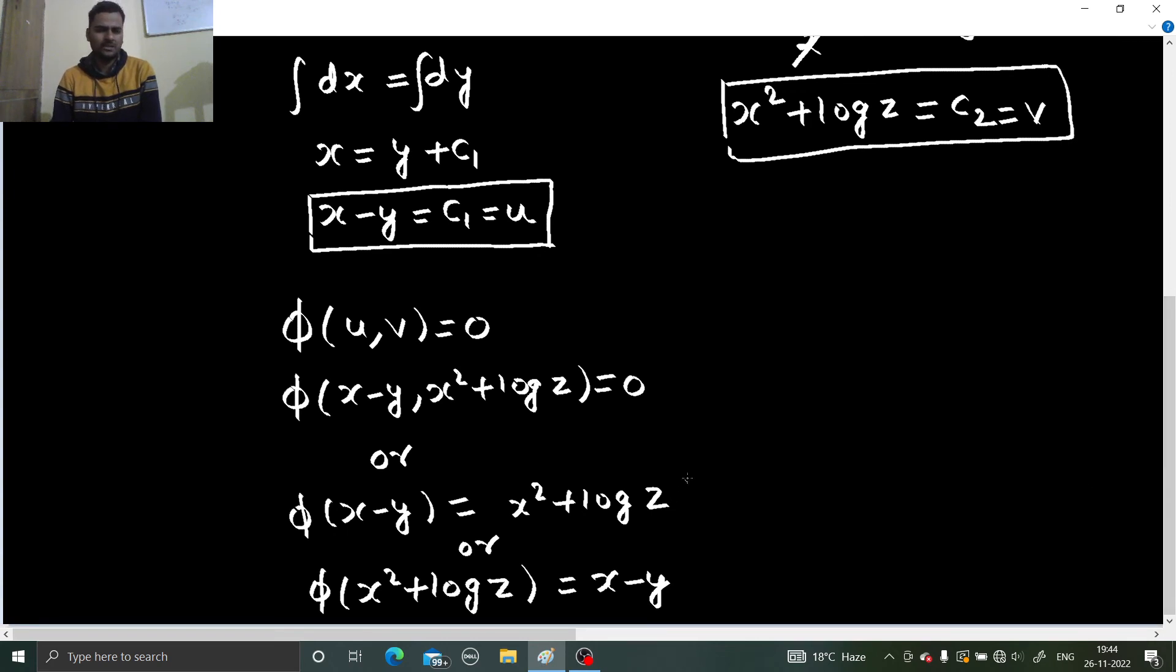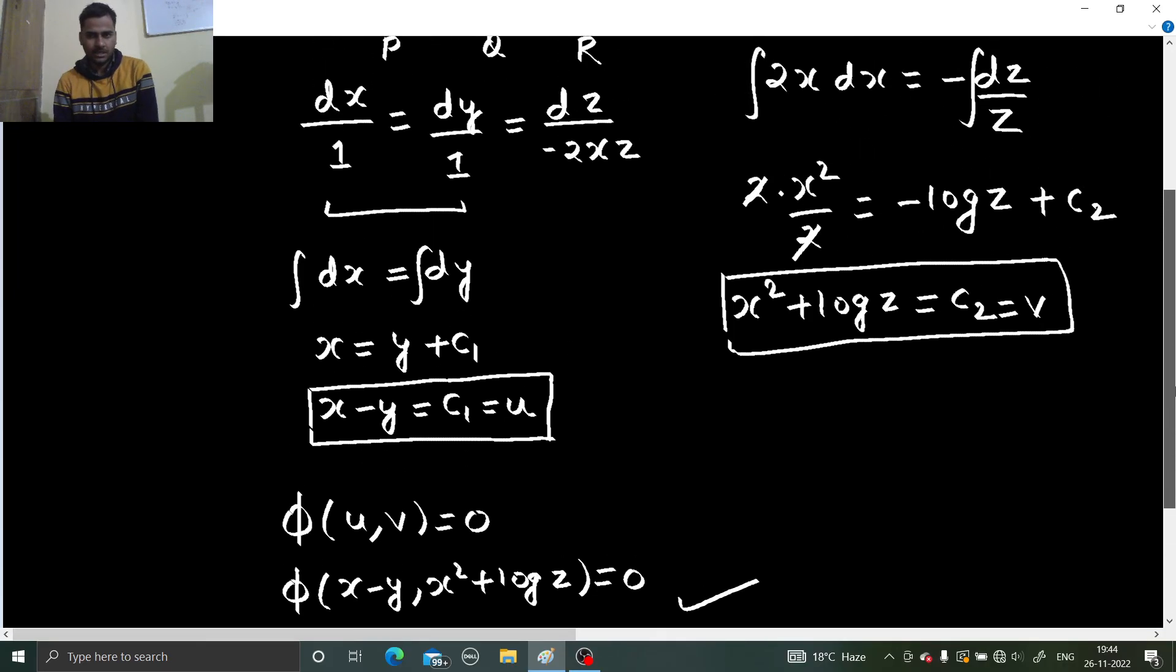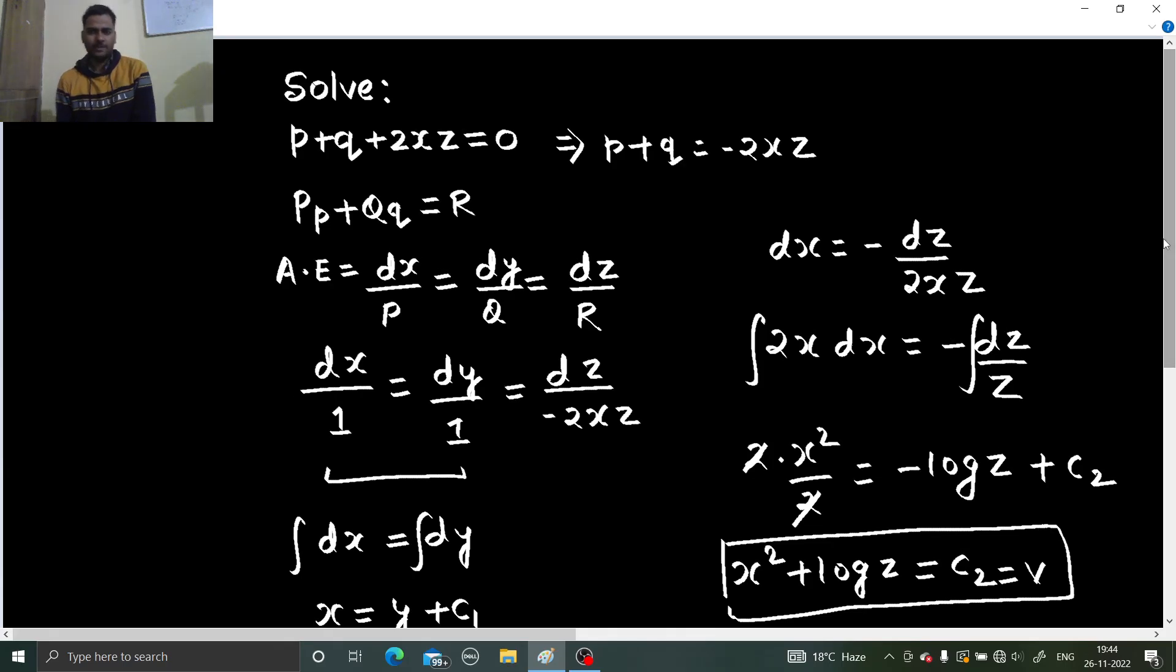That's all. Normally, we prefer this one. You can write any one of these. That's how we did this problem. Not at all difficult. Method of grouping was sufficient for us. Multipliers were not needed which is something becomes a bit of headache if you are not able to strike out the multipliers that what multiplier will be used. How can we find that? Method of grouping was there. So no need to think. No need to worry.